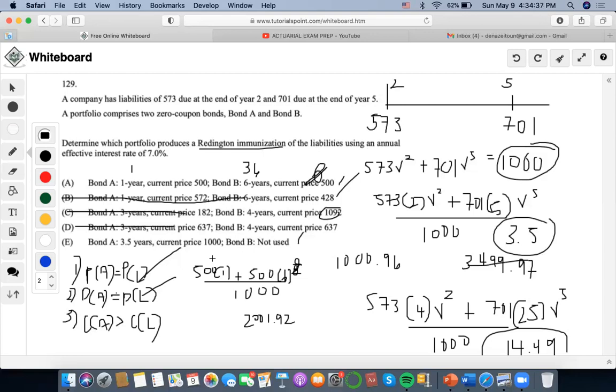Let's check E. It would be 1000 times 3.5 squared divided by 1000, so 12.25 times 1000 divided by 1000, it's going to be 12.25. This is less than 14.49, which means that A would be the only one who satisfies the third condition, so the answer is A.